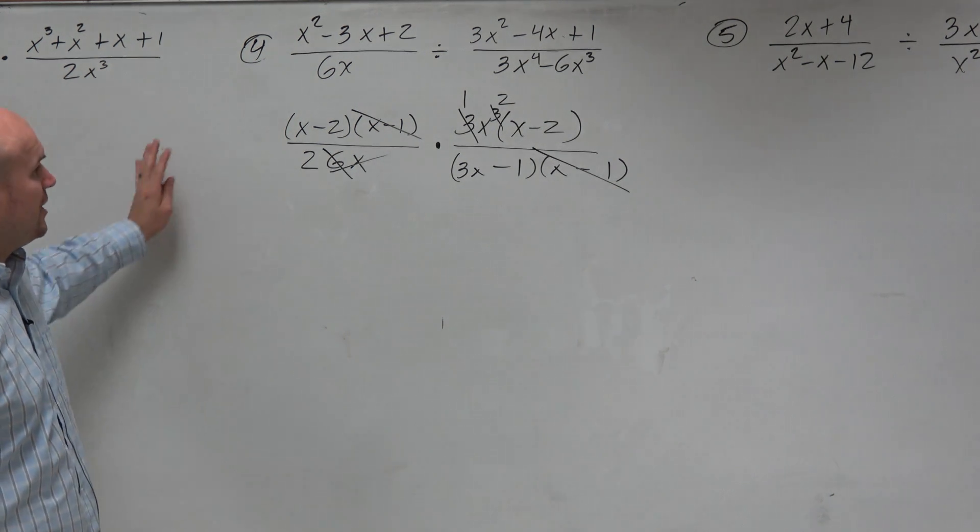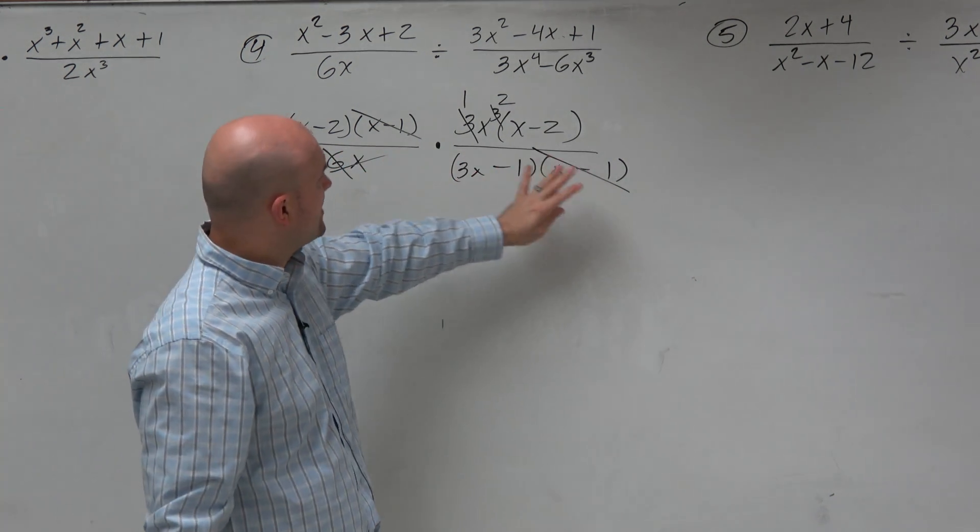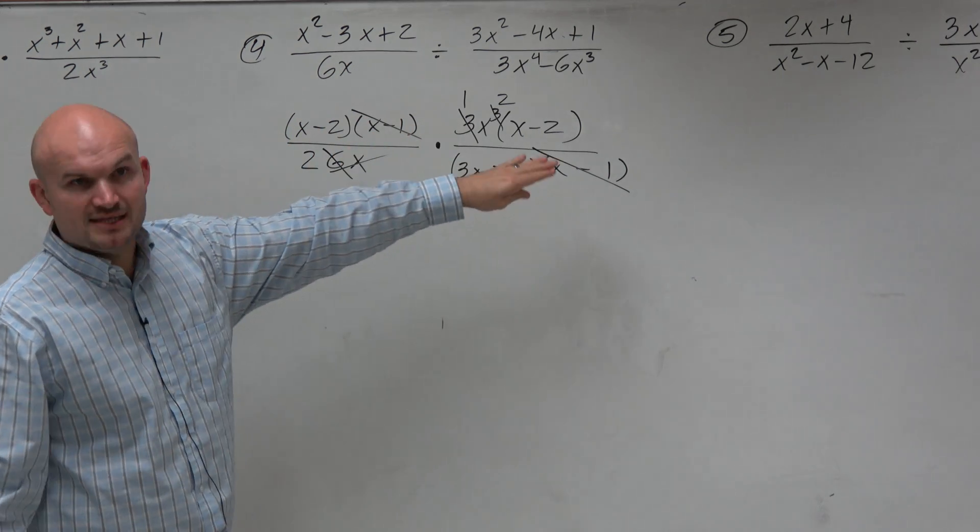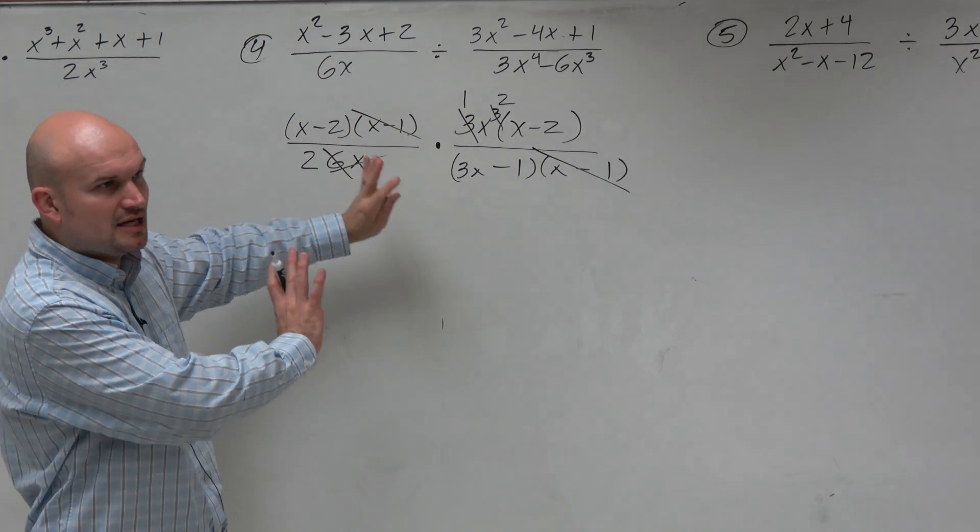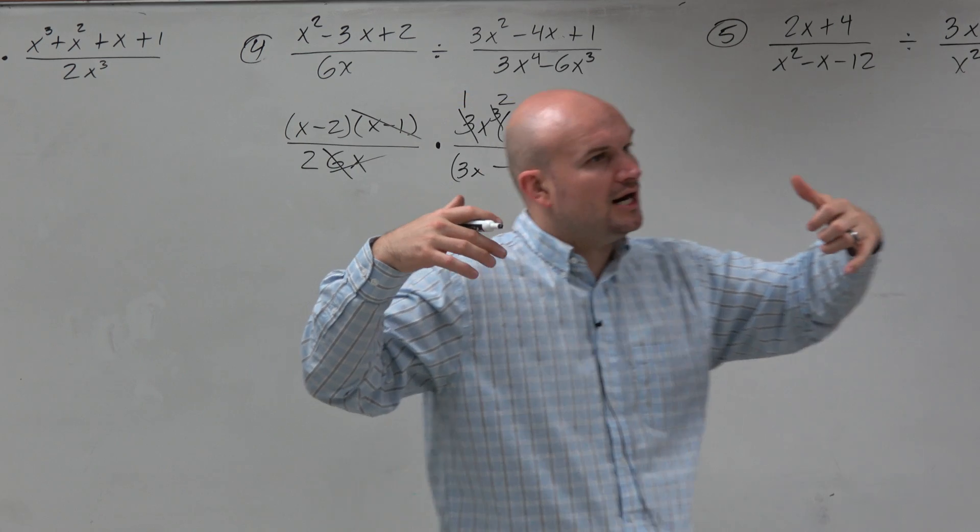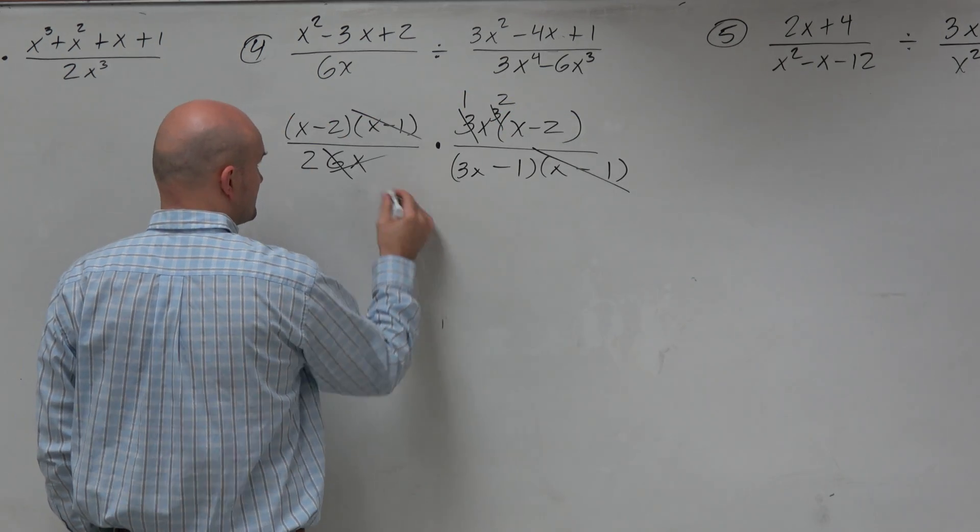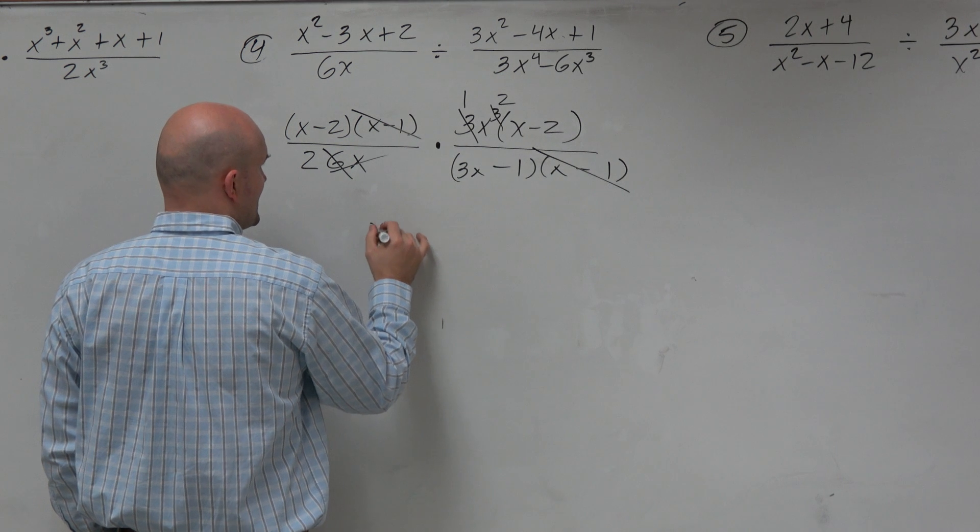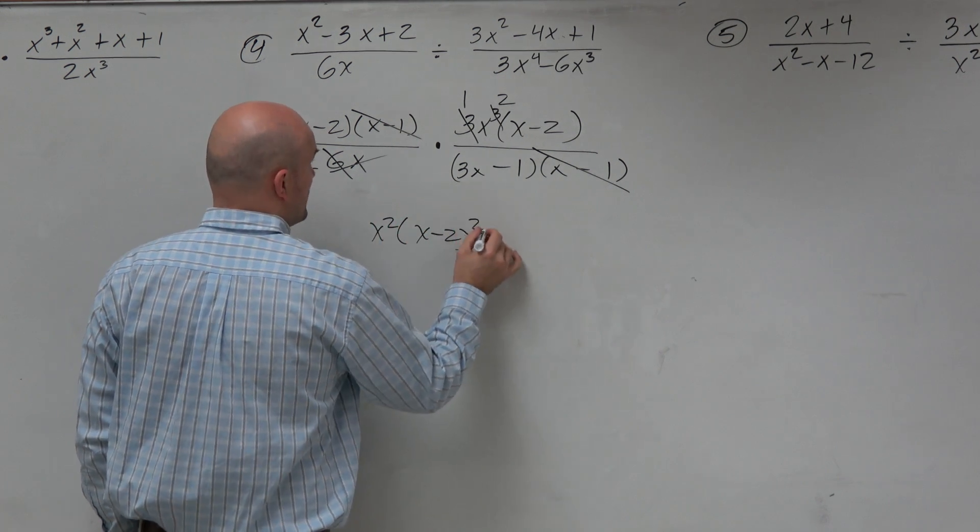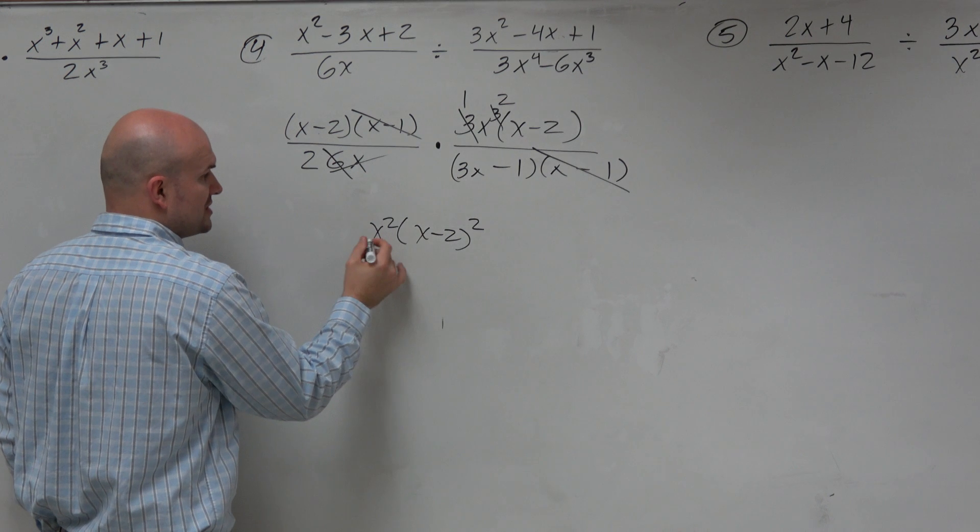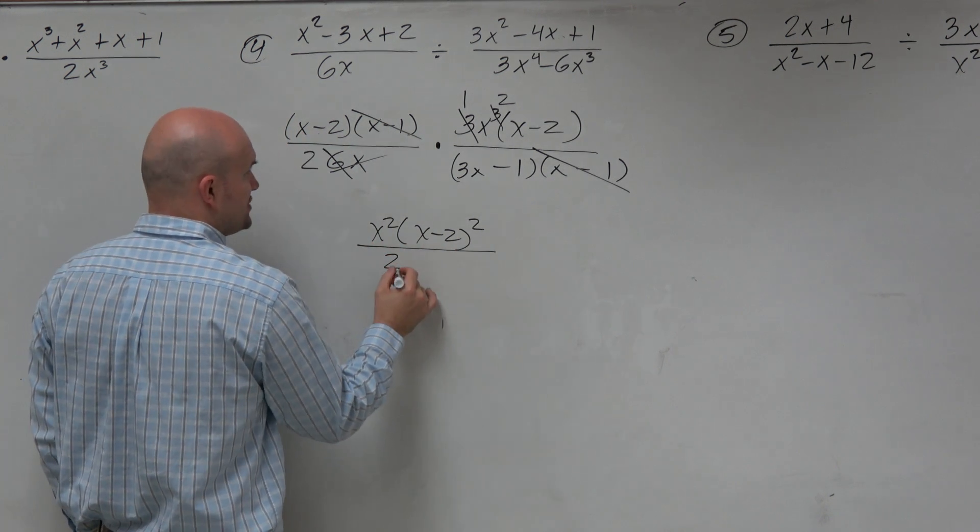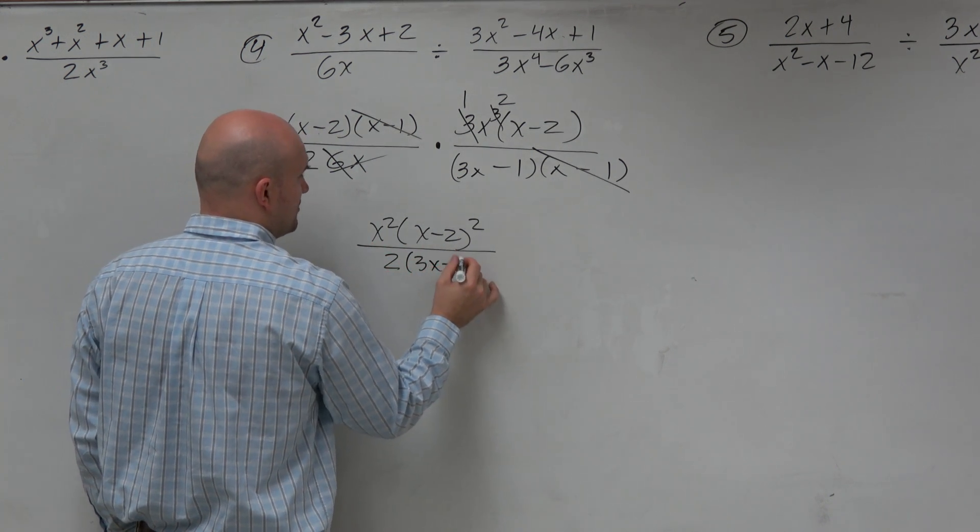Now, when I'm asking you to simplify the rest of this, you don't need to multiply this back out. Okay? I'll let you, you can leave the, well, actually let's, no, never mind, let's multiply this out. So what I'm going to have here is an x squared times x minus 2 squared, right? Because I have two x minus 2's. And that's all over a 2 times 3x minus 1.